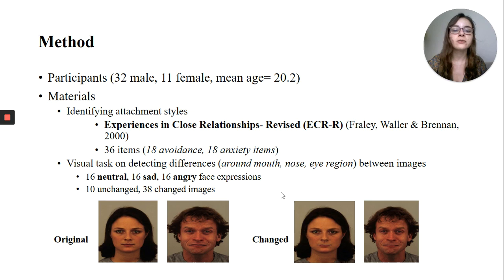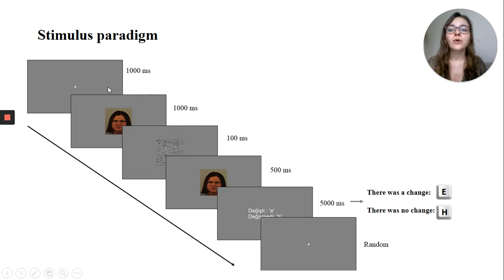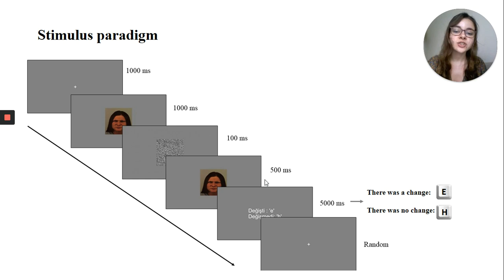This is the stimulus paradigm. For 1000 milliseconds there was a blank screen with fixation points. For 1000 milliseconds the unchanged face image was shown. For 100 milliseconds there was a noise screen. And for 500 milliseconds the changed or unchanged version of the face image appeared. Then there was a response screen for 5000 milliseconds where we asked participants if they detected any change or not.